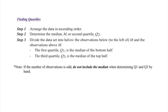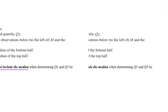Finding these quartiles is very similar to how we found the median previously. First, arrange the data in ascending order. Next, determine the median of the entire data set. Then Q1 is simply the median of the bottom half of the data, while Q3 is simply the median of the top half. We're literally finding the median three times. Important note: if the number of observations is odd, do not include the median when determining Q1 and Q3 by hand.